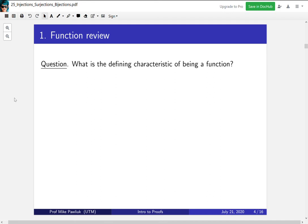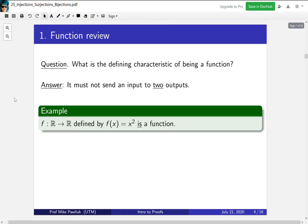First, let's review some things about functions. What is the defining characteristic of being a function? The answer is that it must not send an input to two outputs. As an example, the function f from the reals to the reals, defined by f(x) = x², is a function. Nothing gets sent to two different outputs.